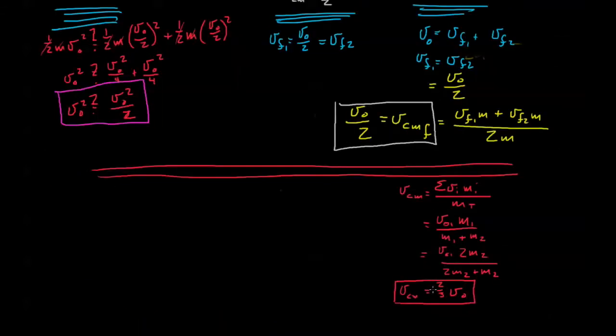Welcome back. Hopefully you came up with something that looked like this where the velocity of the center of mass is two-thirds v-naught, and of course the velocity of the center of mass is the same in the initial situation as it is after the collision. So this is also the final velocity of both carts.